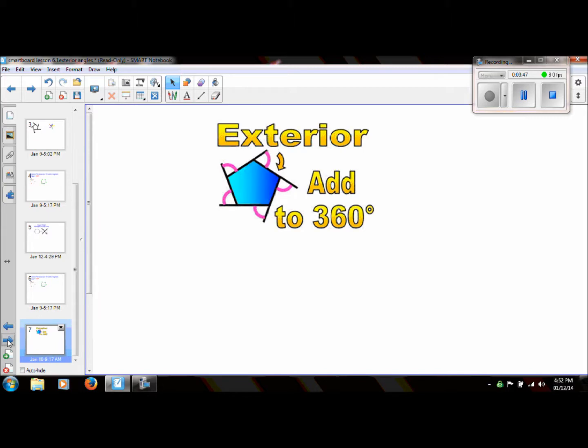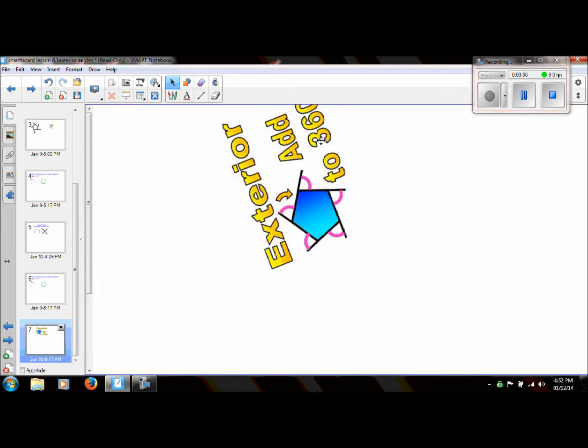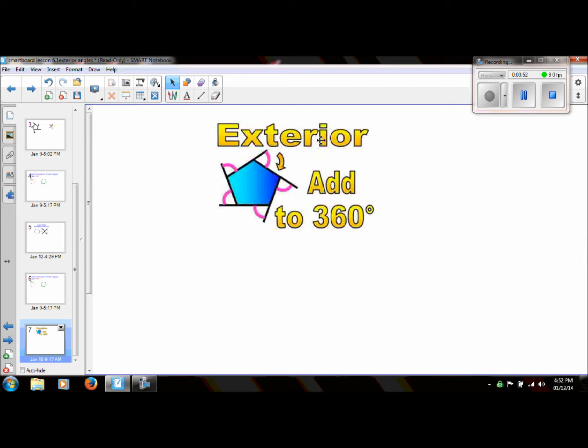So to conclude, the exterior angles of any polygon will always add up to 360 degrees. And if I want to just find one exterior angle, and I can only do this with a regular polygon, I would just use this little formula here: 360 degrees divided by n.